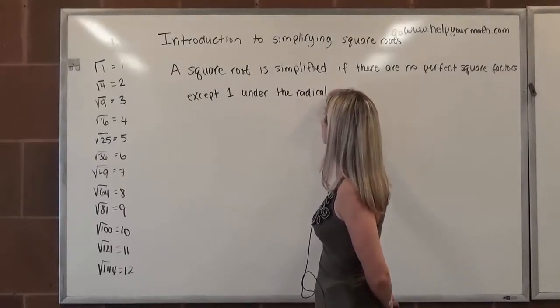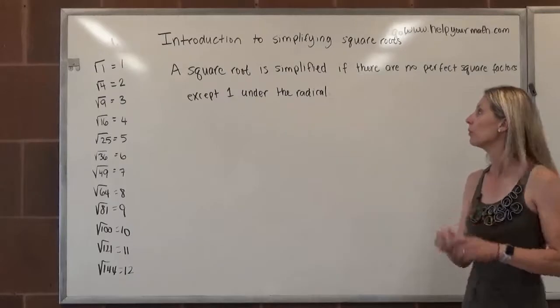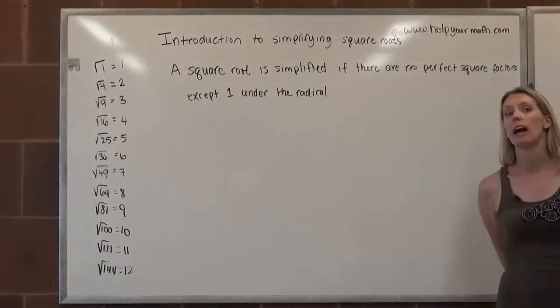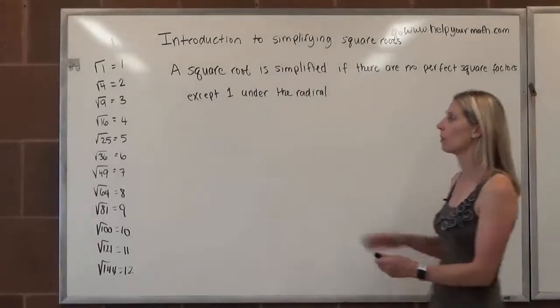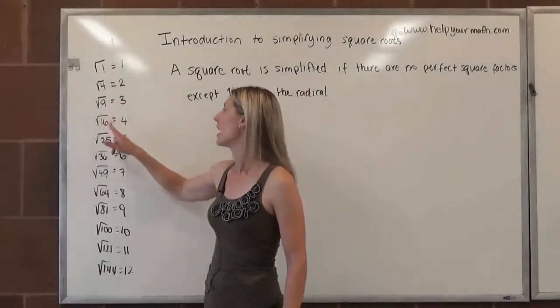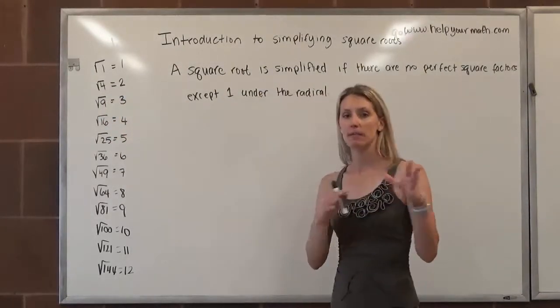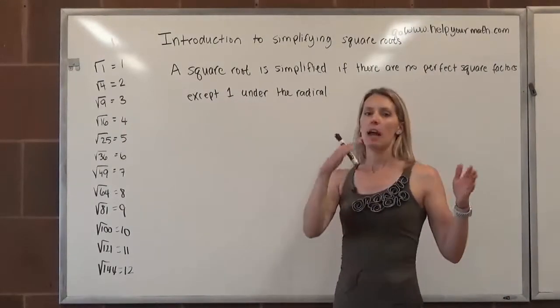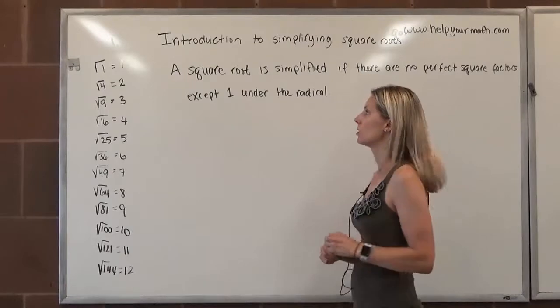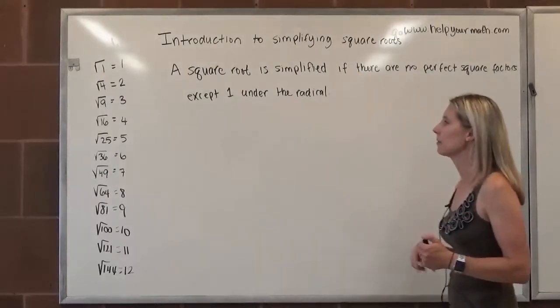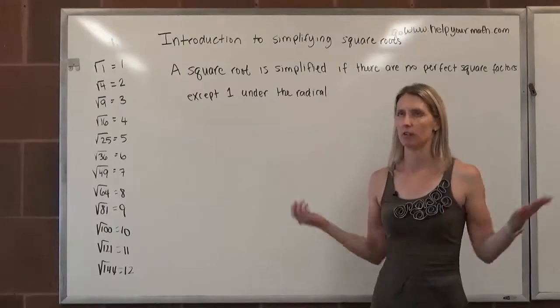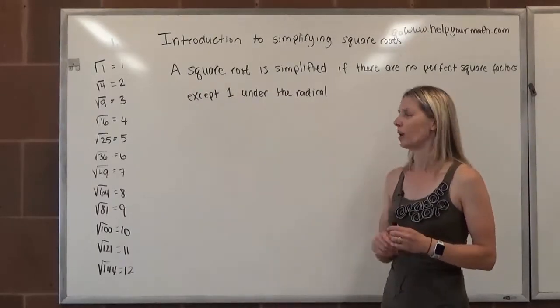So to reiterate this, if we're going to simplify a square root that means that there are no perfect square factors left under the radical. So what we're looking for are factors of four, nine, sixteen, twenty-five because if those are under the radical we want to actually take those square roots because we can and then we write it as a multiplication expression. Obviously we're never going to be able to take one out from anything because it's always going to be stuck there as a factor of everything. So we just ignore one.